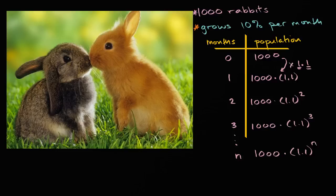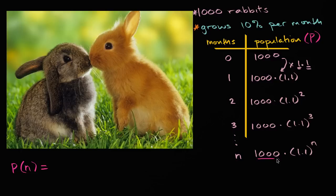And so we can set up an expression here. We could say, look, the population as a function of n is going to be equal to our initial population times 1.1 to the nth power.